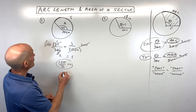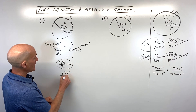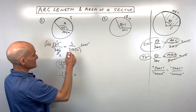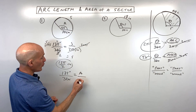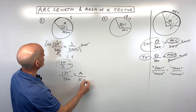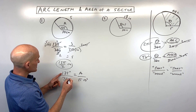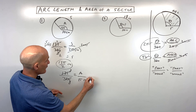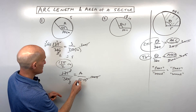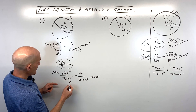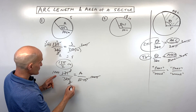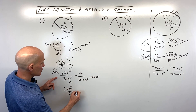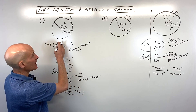For the area, we do the same thing: 135 is to 360 as the area of the sector A is to the area of the whole circle, which is πr², so π times 10 squared. Reducing: 45 goes into 135 three times and 45 goes into 360 eight times. Multiplying both sides by 100π to get A by itself, then reducing further — 4 goes into 8 twice and 4 goes into 100 twenty-five times — this comes out to 75π over 2 centimeters squared as the area.